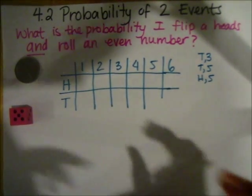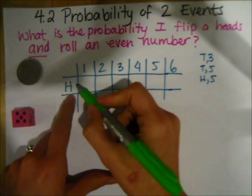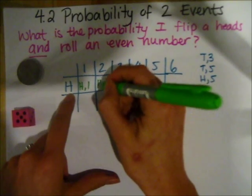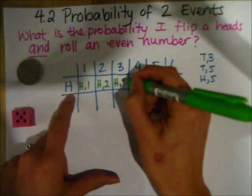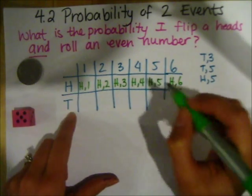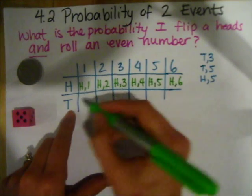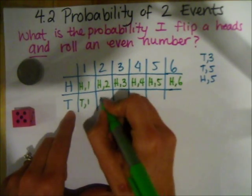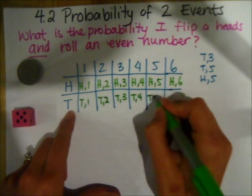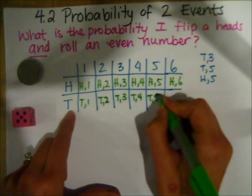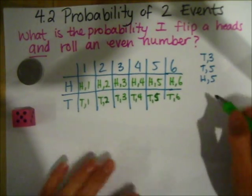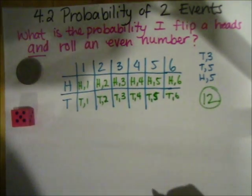Now I can fill in my sample space diagram by listing the different combinations. So heads and a one, heads and a two, heads and three, heads and four, heads and five, heads and six. Then the six possibilities for tails: tails and a one, tails and a two, tails and three — and so on. You can see that I actually have 12 different possibilities.